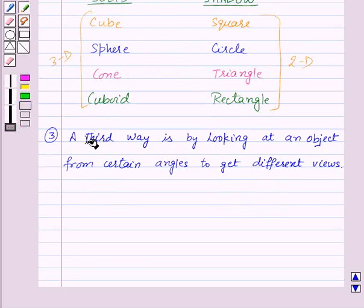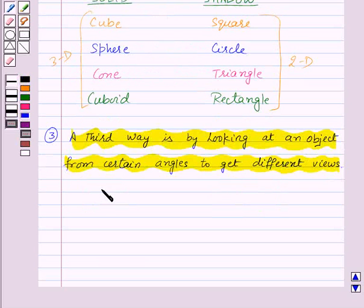And now a third way is by looking at an object from certain angles to get different views. If we have a solid, then we can look at it from the front, from the side, and from the top to get information about the shape of the solid.